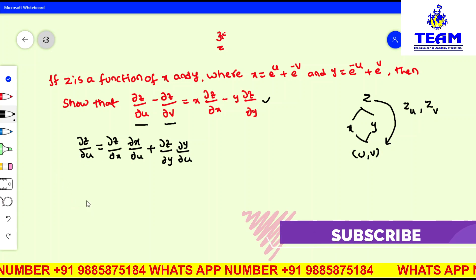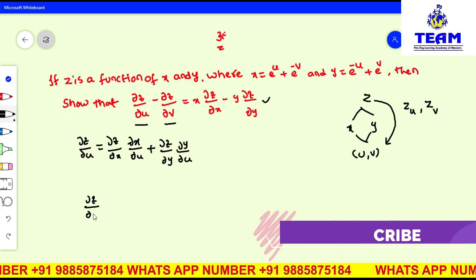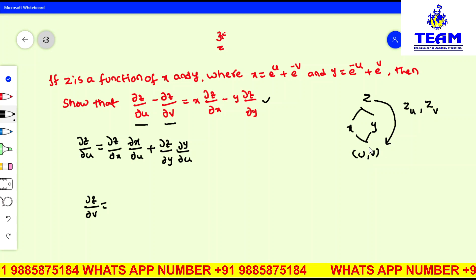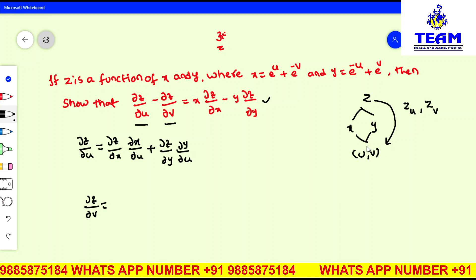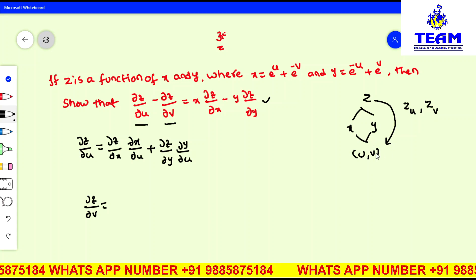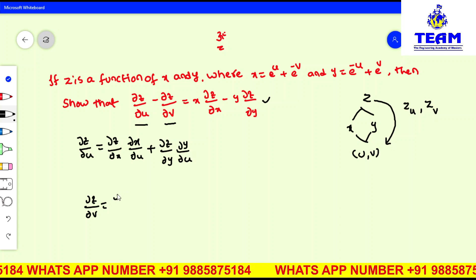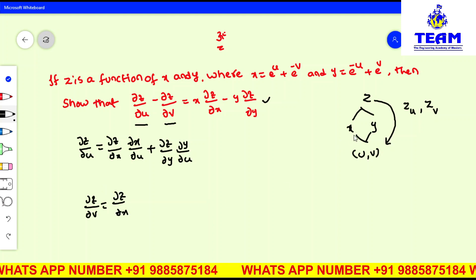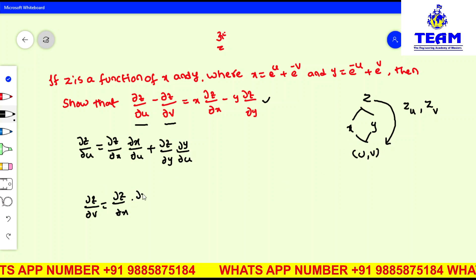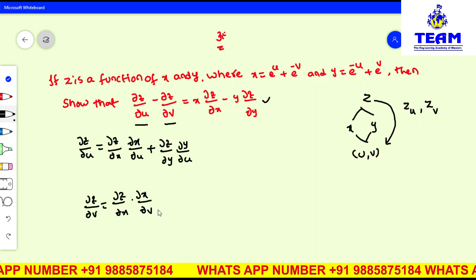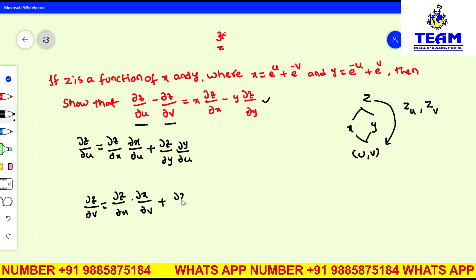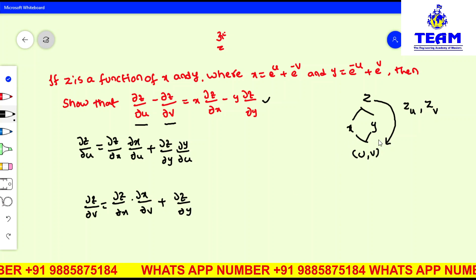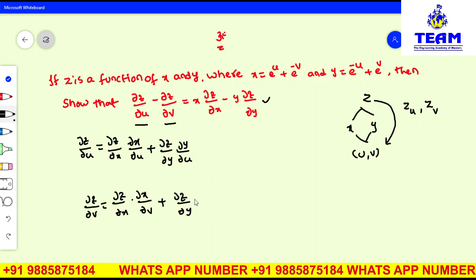Next, the ∂z/∂v formula I am also writing from the total derivative, also called the chain rule. So: ∂z/∂v = ∂z/∂x times ∂x/∂v, plus ∂z/∂y times ∂y/∂v.